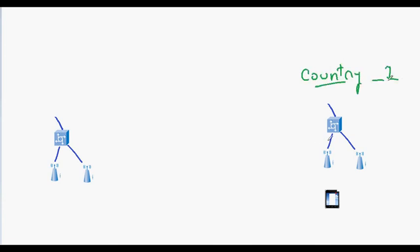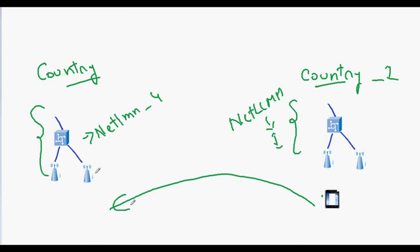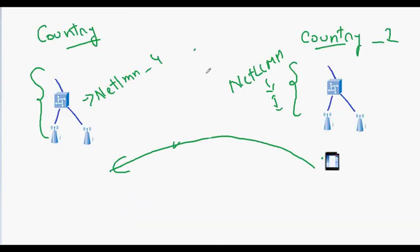For example, if the mobile node is in one country and its network infrastructure is using a NetLMM1 solution, and another country is using a NetLMM4 solution, the mobile node without any modifications can go from country 1 to country 2 and connect to the network. Maybe there can also be a network connection lost if the two countries are really far, but the whole idea is the mobile node need not have a software or hardware modification. Without any software and hardware modification, a mobile node can change from network type 1 infrastructure to network type 4 infrastructure.